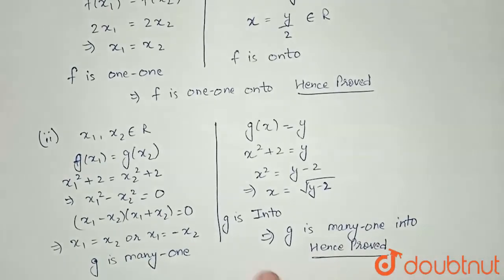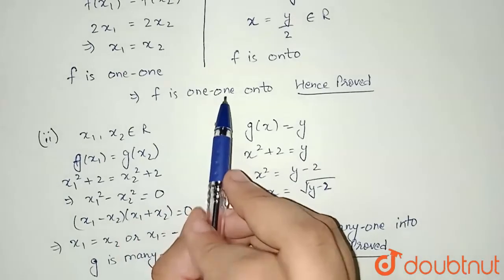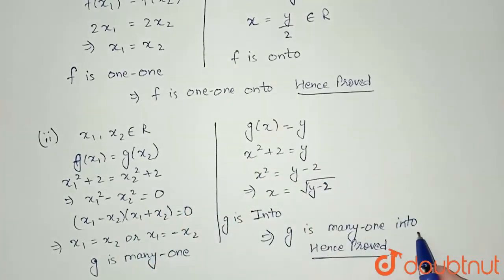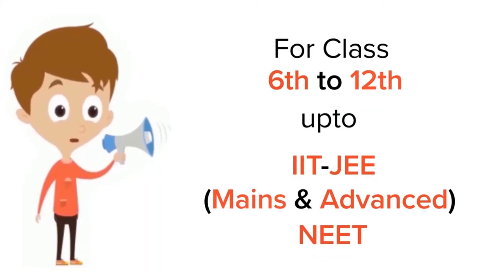I have proved first that f is one-one onto, and second g is many-one into, hence proved. So this is our final answer. Thank you.